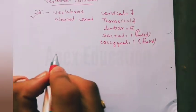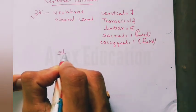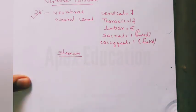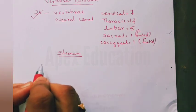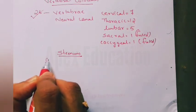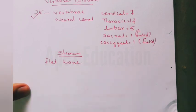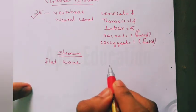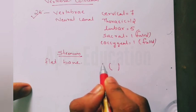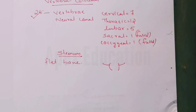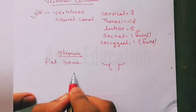The sternum is a single flat bone where the ribs articulate. That is all about the sternum.